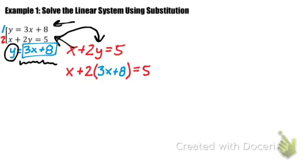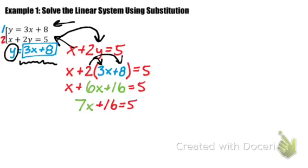So then I'm going to simplify my equation. I'm going to distribute my 2 to my 3x and 2 to my 8 using multiplication. So I get x plus 6x plus 16 equals 5. I'm going to simplify further and then subtract 16 from both sides, and finally divide both sides by 7.